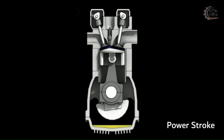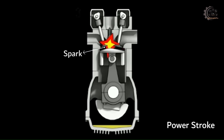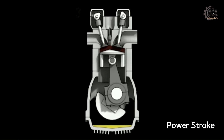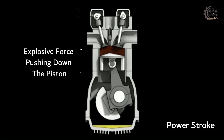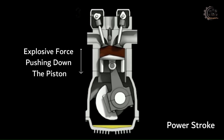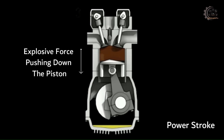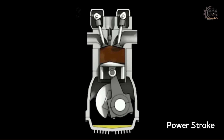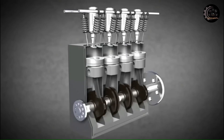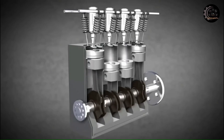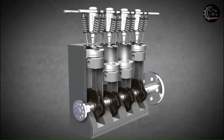Power stroke: The fuel-air mixture at high pressure and temperature is ignited by a spark. The spark ignites the fuel-air mixture, and this burning further increases the pressure and temperature of the gases. The gases expand, producing an explosive force that pushes the piston down at high acceleration. The linear movement of the piston is then converted into rotary motion of the crankshaft.